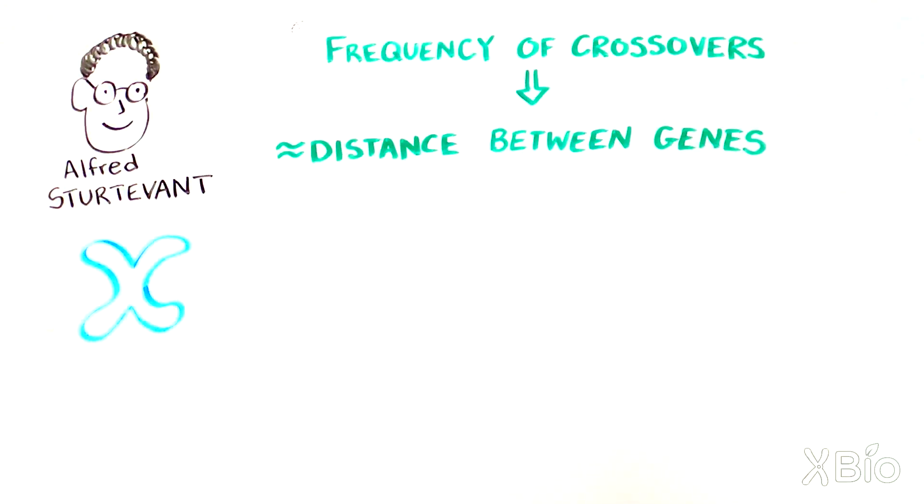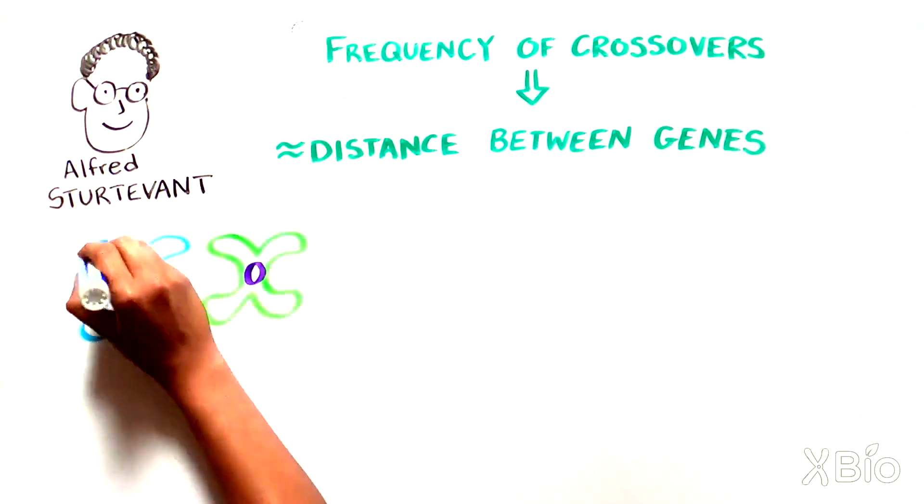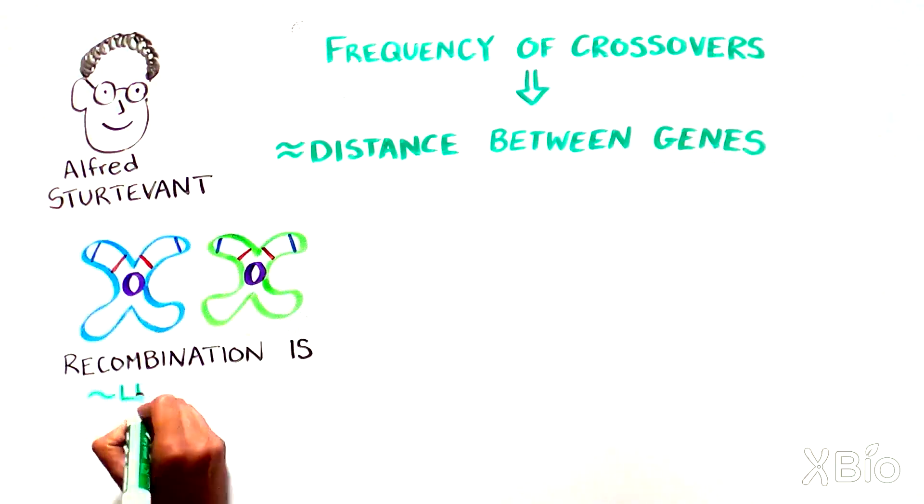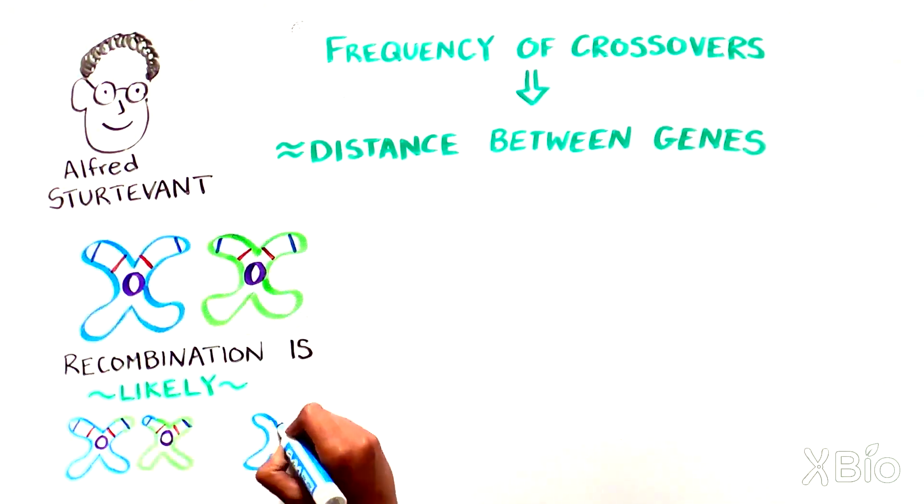How did he do this? Let's look at the chromosome pair below. If the genes for eye color and wing length are very far apart from each other on the chromosome, it is very likely that recombination could occur at a spot in between the two genes.